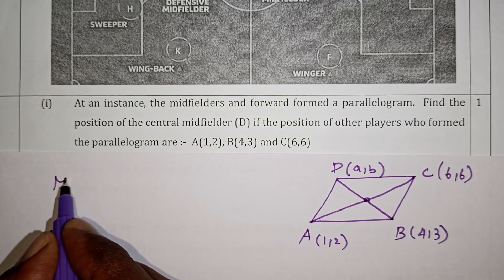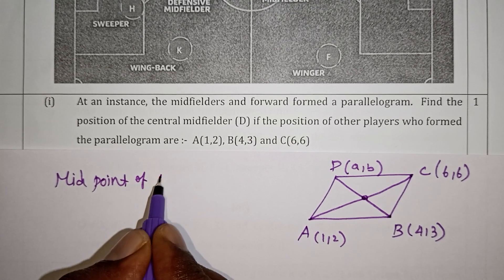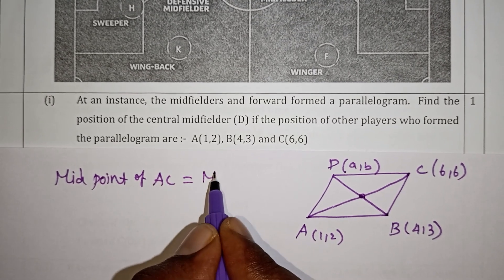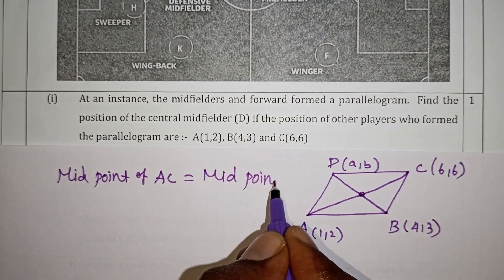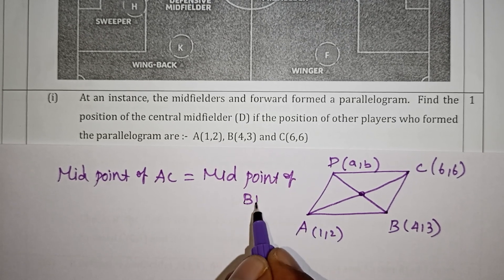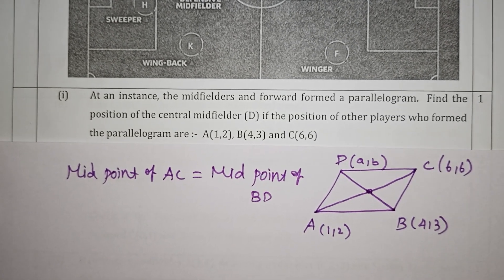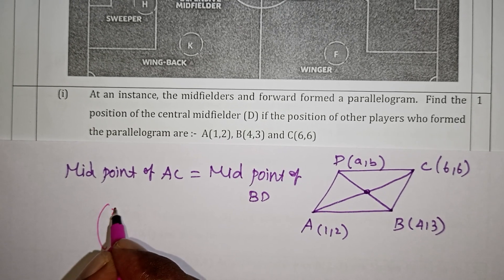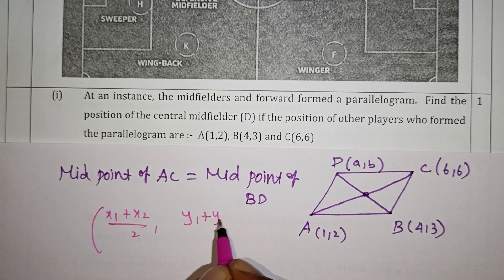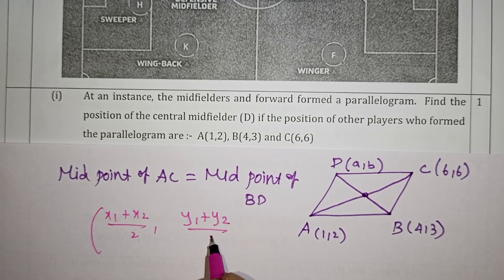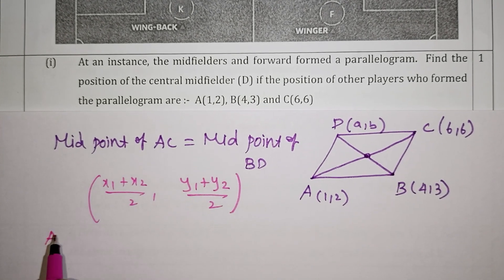The midpoint formula is: (x1 + x2)/2, (y1 + y2)/2. This is the basic formula. The midpoint of AC equals the midpoint of BD. A is a point, C is (6,6). B is a point, D is the unknown point.